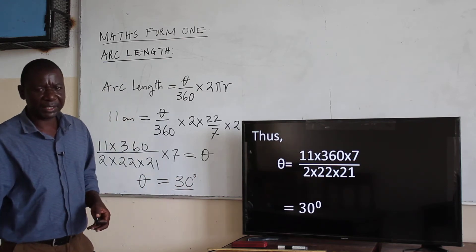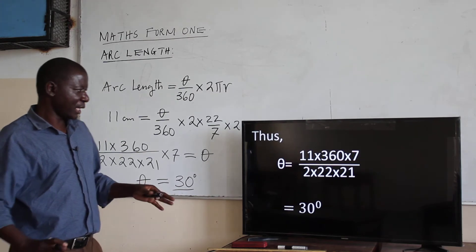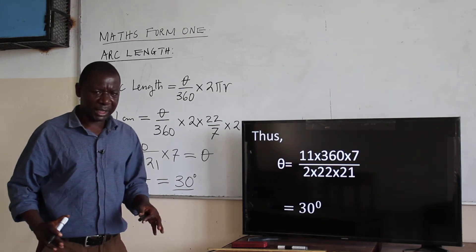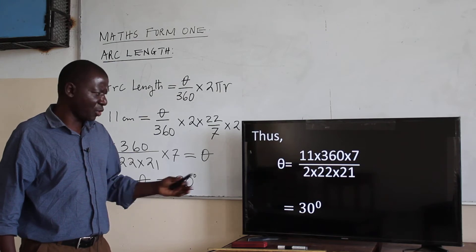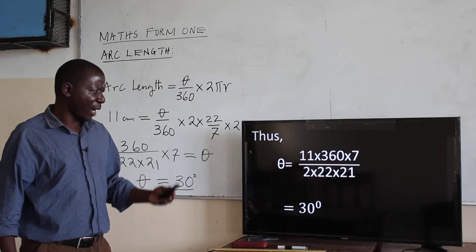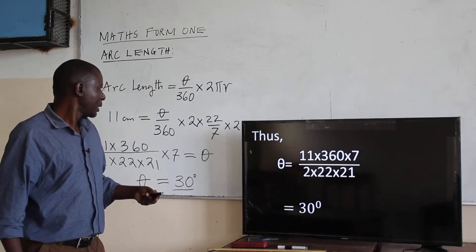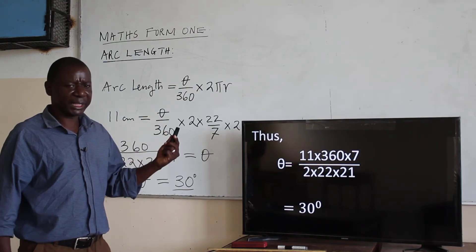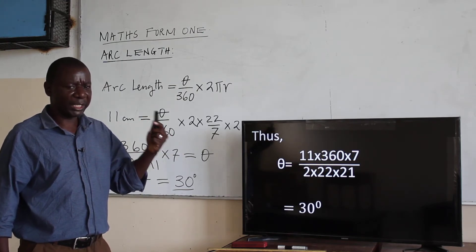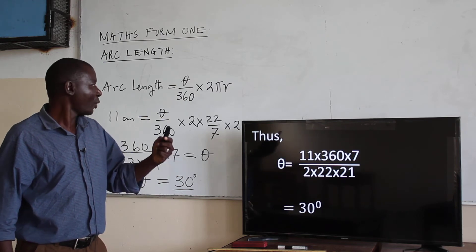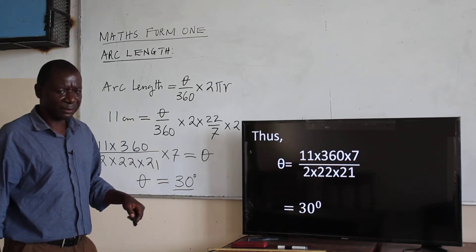So these are practical questions. From the formula of the arc length, you can calculate the angle, you can calculate the arc length itself, and you can also calculate the radius if it is not given.